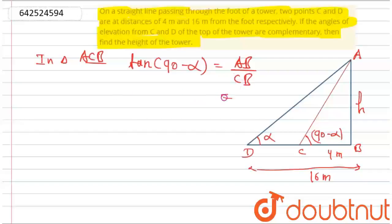That will be equal to h upon 4, which is tan(90 minus alpha). And you know tan(90 minus alpha) can be written as cot alpha, so cot alpha will be equal to h upon 4. Let's say this is equation number one.